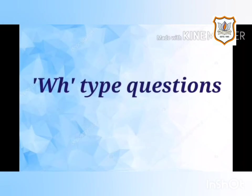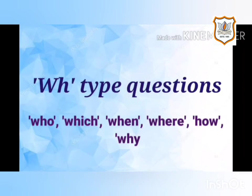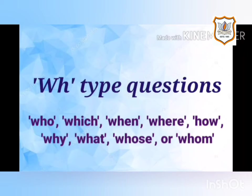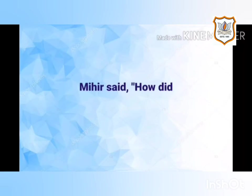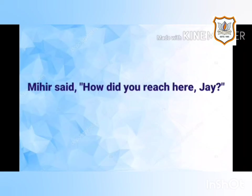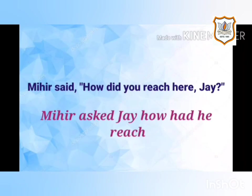WH type questions: If a question begins with who, which, when, where, how, why, what, whose, or whom, it is a WH type question. Use the same WH word in the indirect speech instead of 'that.' For example, 'Mihir said, how did you reach here, J?' The question begins with 'how,' so it is a WH type question. Answer: Mihir asked J how he had reached there.